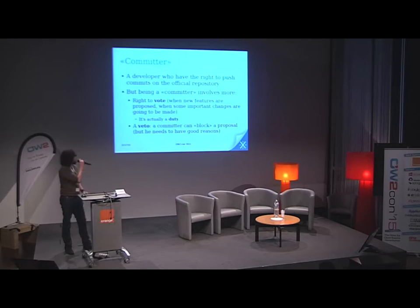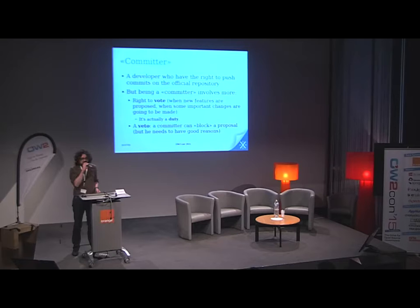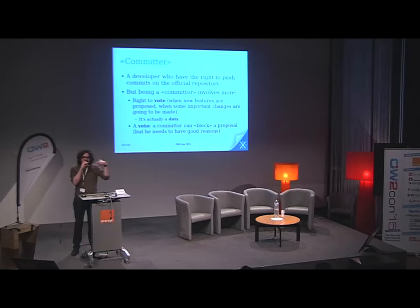Some people inside the community have a special status — they are committers. A committer is a developer who has the right to push commits to the official repository, but it actually involves more. A committer has the right to vote. When a new feature is proposed or important changes are going to be made, we organize a vote. It's actually a duty to vote, because when someone wants to work on an important feature, it's important they don't waste time waiting for answers.